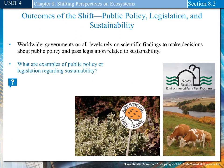Outcomes of the shift include changes in public policy, legislation, and sustainability. Worldwide, governments rely on scientific findings to make decisions about public policy and passing legislation related to sustainability. Examples include Nova Scotia's Non-Essential Pest Control Act, the Great Lakes Water Quality Agreement, environmental farm plans, replacing highway light bulbs with energy-efficient ones, idling control bylaws, and banning the importation, sale, and advertising of baby bottles containing BPA.